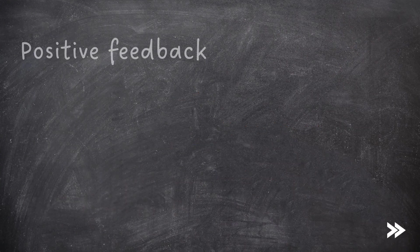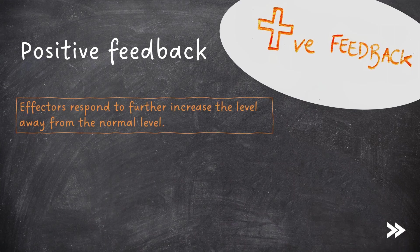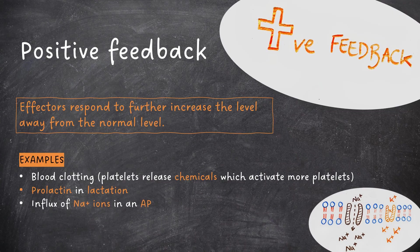Finally, it would be useful to consider positive feedback as well. In positive feedback, effectors respond to further increase the level away from the normal level. Examples include blood clotting, where platelets release chemicals which further activate more platelets. Other examples include prolactin in lactation, or the influx of sodium ions in an action potential.